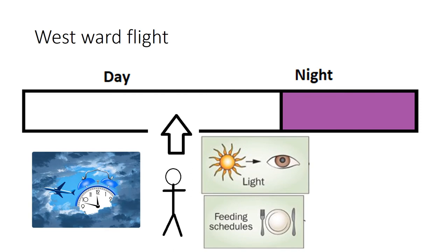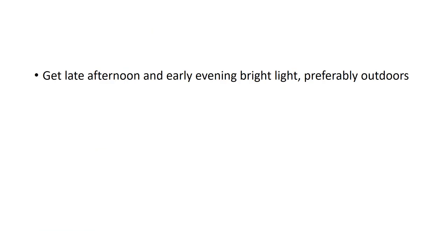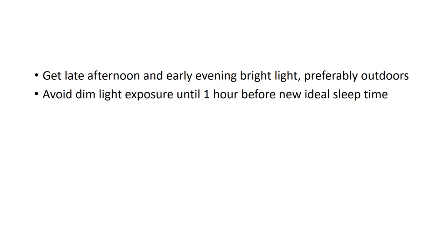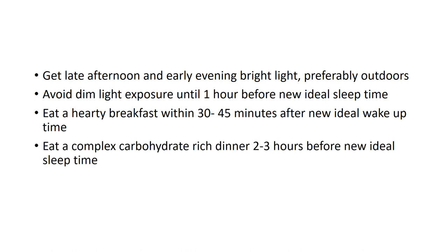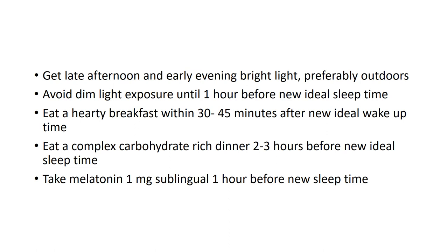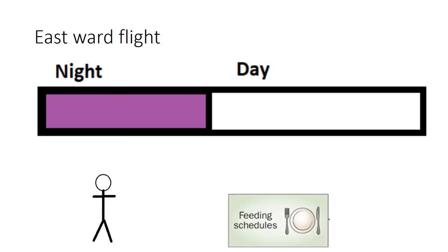So after our day is prolonged, we will get a good night's sleep. Factors that minimize the effects of westward jet lag: get late afternoon and early evening bright light, preferably outdoors; avoid dim light exposure until one hour before the new ideal sleep time; eat a hearty breakfast within 30 to 45 minutes after the new ideal wake-up time; eat a complex carbohydrate-rich dinner two to three hours before the new ideal sleep time; and if desired, take one milligram of melatonin sublingually one hour before the new sleep time.